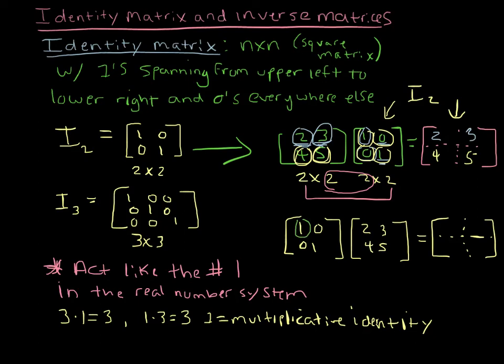1 times 2 plus 0 times 4 gives you a 2. 1 times 3 plus 0 times 5 is 3. 0 times 2 plus 1 times 4 gives you a 4. And 0 times 3 plus 1 times 5 gives you a 5.